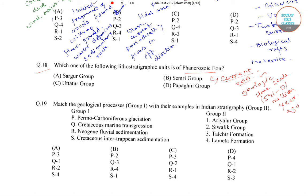So this is the Phanerozoic Eon and among the following options only Uttator group is the lithostratigraphic unit which is of Phanerozoic Eon. So the correct answer is option number C.